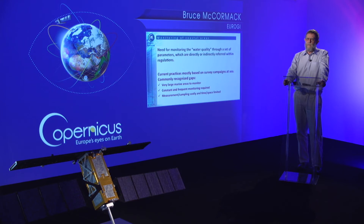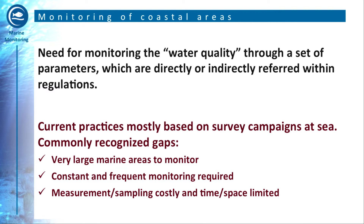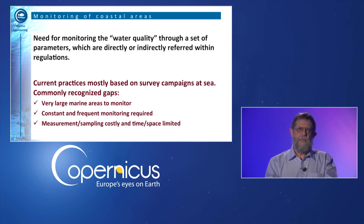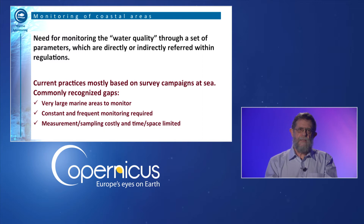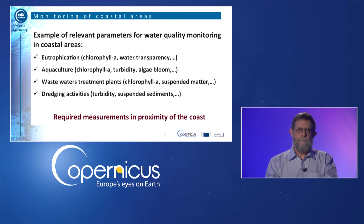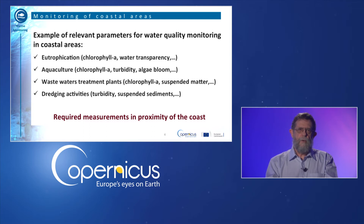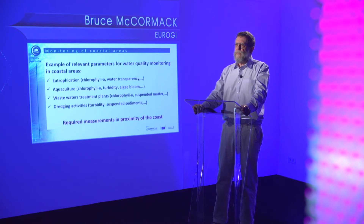So water quality needs to be monitored. This is commonly accomplished by measurement of parameters made directly at sea or through taking water samples and later analysing them in a laboratory. However, when large water areas need to be monitored regularly, survey campaigns are limited by practical factors such as the availability of suitable ships, manpower, or measuring equipment, and by the associated relatively high costs. Some of the most frequently considered parameters for evaluating water quality are chlorophyll levels, water transparency, turbidity, and phenomena linked to them like algae blooms.